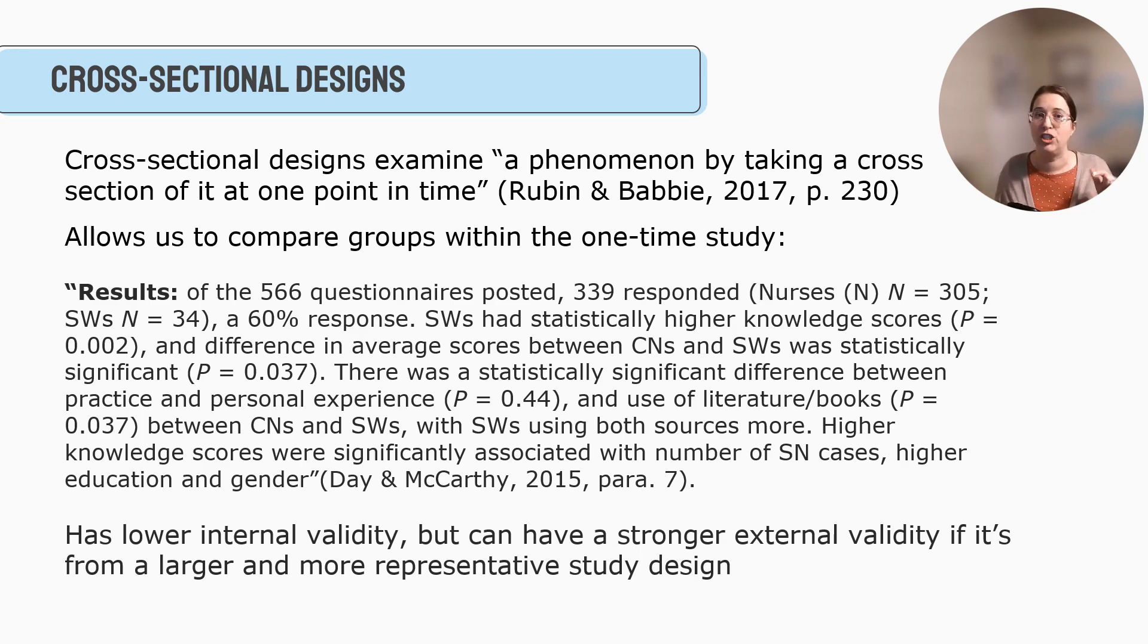And so social work, a lot of research studies use this design. And it's also really great because you can use it in different ways. You can use it in explanatory or an exploratory study. You can use it as a descriptive study. There's a lot of different methods that you can use. And so even though it has lower internal validity than maybe some other designs, it can have stronger external validity if it's larger and a more representative study design. So at this point, because they had a large sample, 305 nurses and 34 social workers is a pretty decent response rate. Maybe this could apply or be generalizable to other nurses versus if we did a pre-test post-test and I only ended up with a sample of 12 nurses and two social workers, I might have a harder time saying this is representative of the larger group that I'm trying to study.